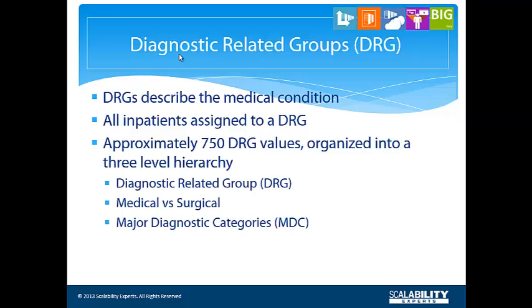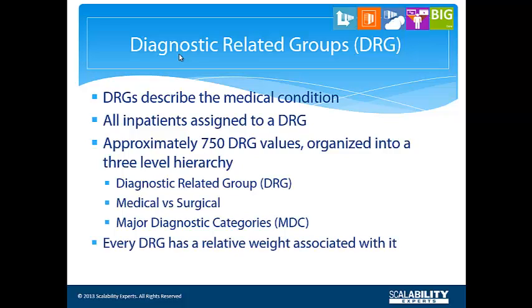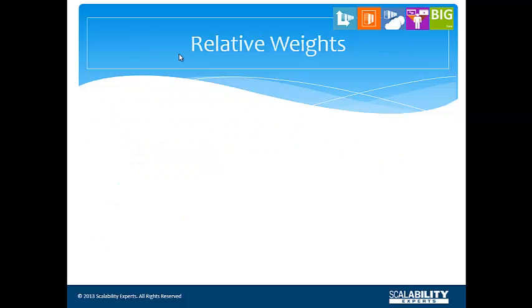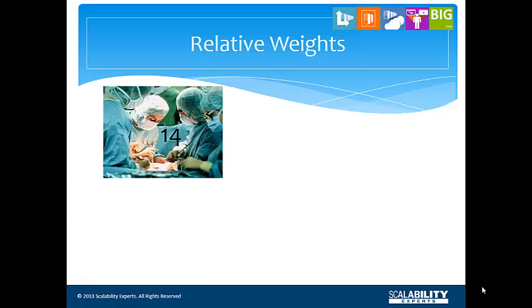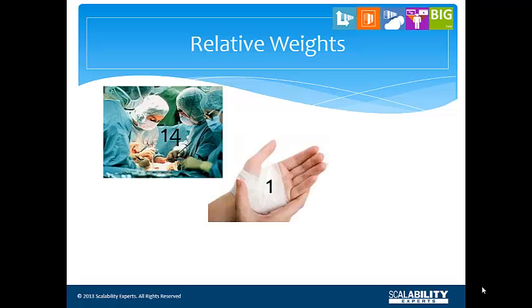You will see these elements throughout this demonstration of healthcare analytics. Every DRG has a relative weight assigned to it that indicates the amount of resources required to treat patients in that group as compared to others. For example, a heart transplant without complication may have a value of 14, a hand procedure for injury a 1, and a normal newborn 0.15.